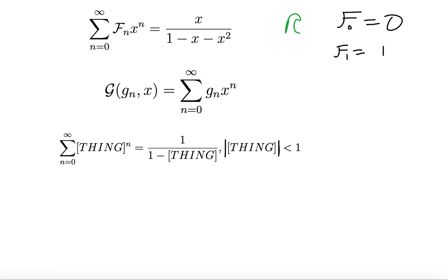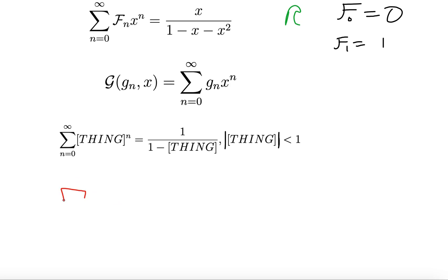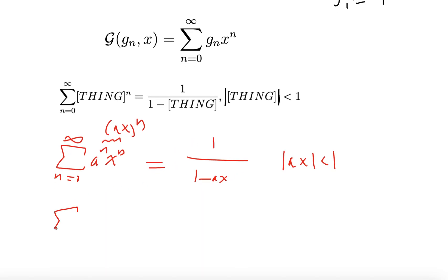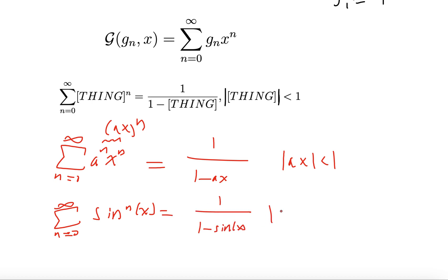You can plug in, instead of x^n, a^n x^n. The sum from n equals 0 to infinity of a^n x^n is the same as the sum of (ax)^n, which equals 1 over 1 minus ax, as long as the absolute value of ax is less than 1. For example, the sum from n equals 0 to infinity of sin^n(x) equals 1 over 1 minus sin(x), as long as the absolute value of sin(x) is less than 1.